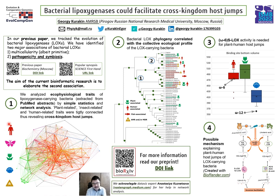Red means human or vertebrate, magenta or violet means insects, green means plants, blue means marine organisms, and yellow means public health threats — for example, emerging pathogens and antimicrobial resistance.